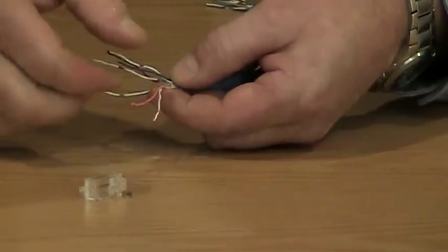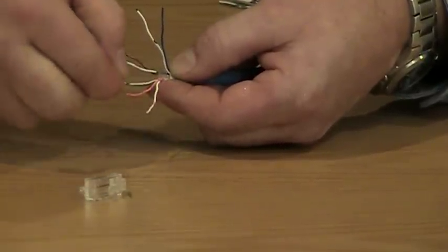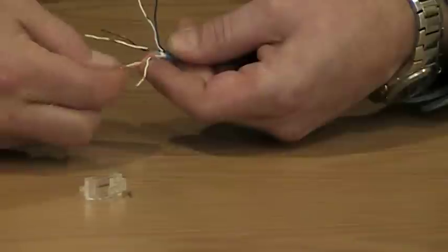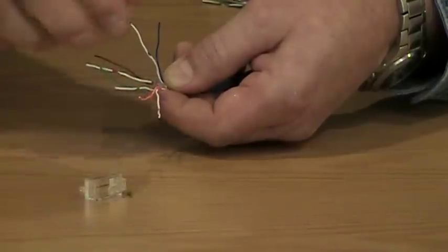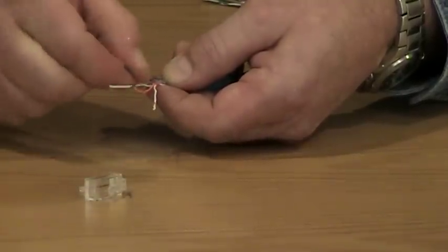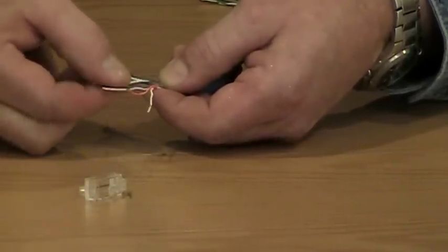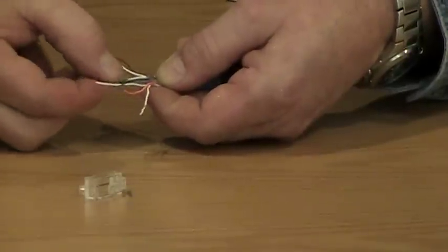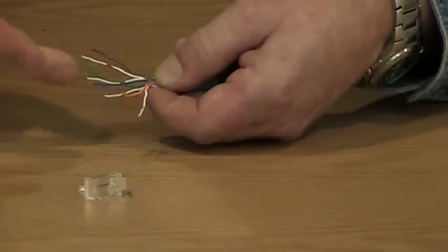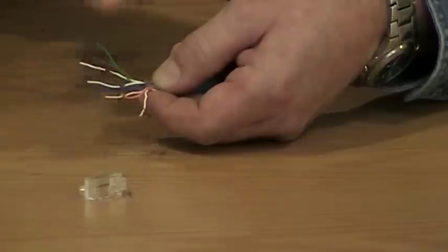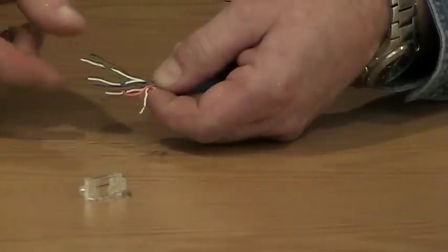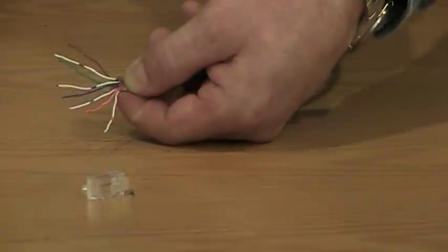So we're going to go left to right: white orange, orange, the third conductor in that sequence is white green and I'm going to bring that to the bottom so it's in that slot in the bottom. Now the blue and white blue come down to the top, and the sequence goes white orange, then orange, white green, then blue, white blue, then green, and the green is laying in that slot in the bottom, and then white brown and brown. That's the proper sequence for us.